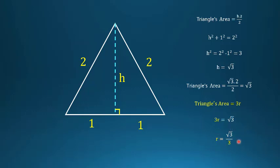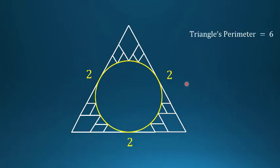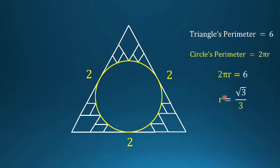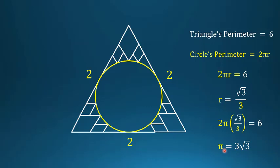Now we use this value of r. We established that the triangle's perimeter is 6, the white figure always has perimeter 6, and the circle's perimeter is 2πr. Setting 2πr = 6 and substituting r = √3/3, we get 2π × (√3/3) = 6. Simplifying — dividing both sides by 2 gives 3, and √3/3 = 1/√3 — multiplying through by √3 gives π = 3√3. So we've 'proved' π = 3√3.